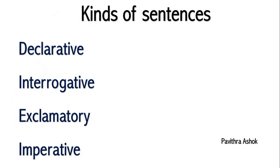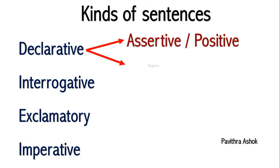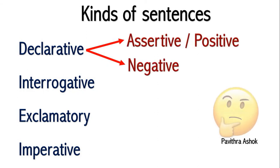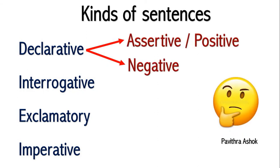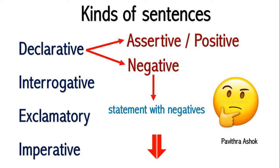Students, I have already explained positive and negative statements in kinds of sentences. I hope you remember it. Negative sentences are statements with negatives. If you have not watched it, the link is in the description — just click on that link and you will understand the kinds of sentences in detail.